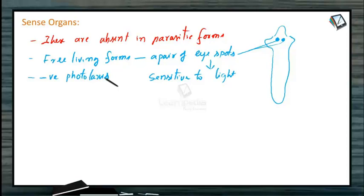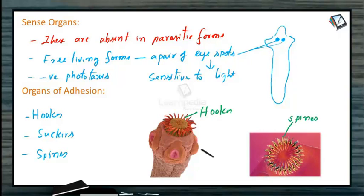The organs of adhesion or attachment are hooks, suckers, and spines. These are hooks, there may be some spines, and also suckers. It may be two to four suckers in flatworms. All of them are useful for adhesion or attachment. That is why they are called organs of adhesion.